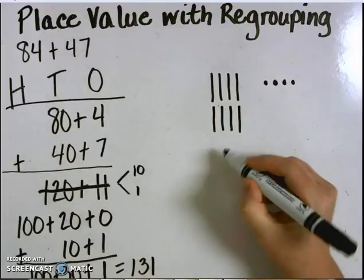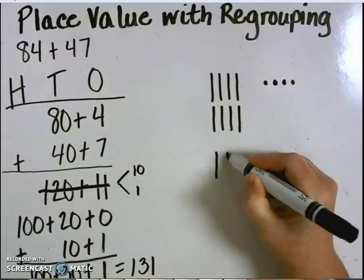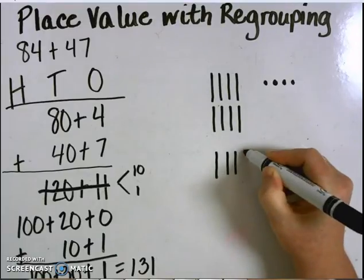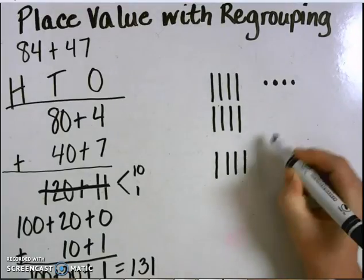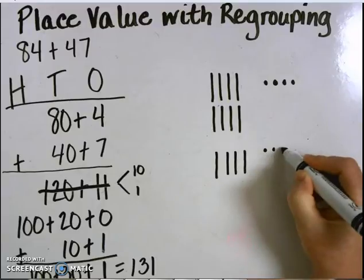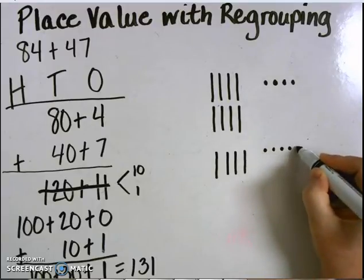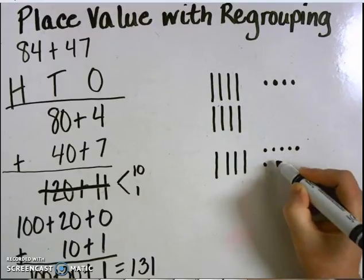One 10, two 10s, three 10s, four 10s, one, two, three, four, five, six, seven.